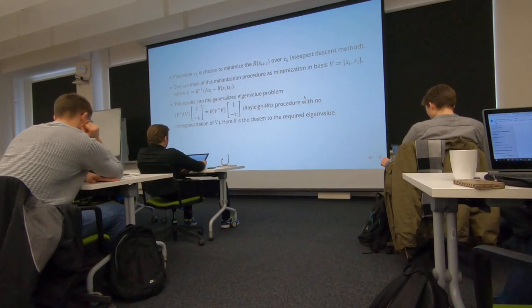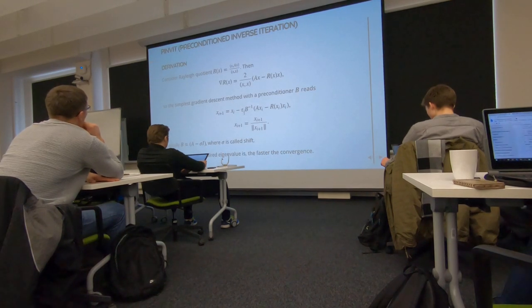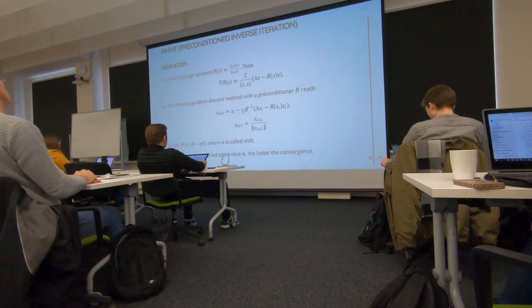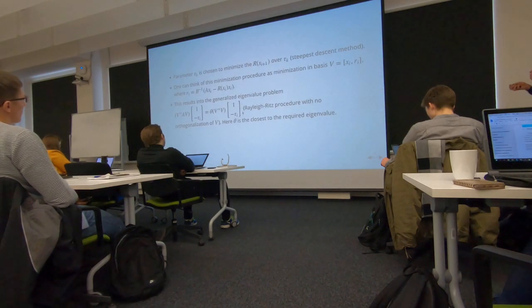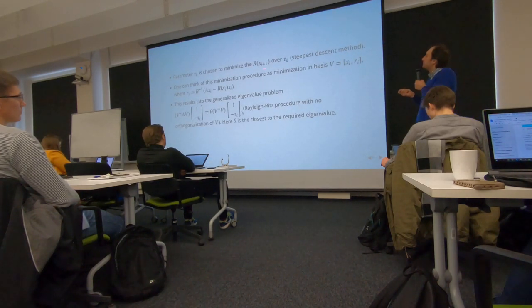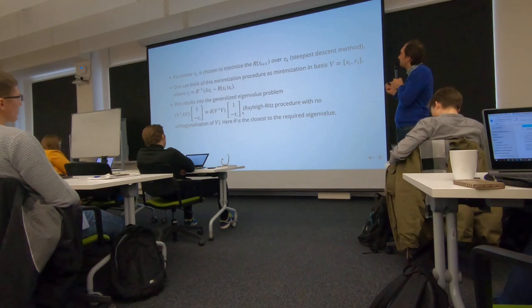You can also do, this is not given here in the format. Here you have this parameter tau. But you can also find tau just by minimizing the Rayleigh quotient. This would be steepest descent.